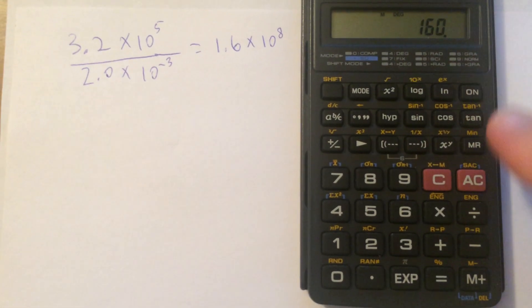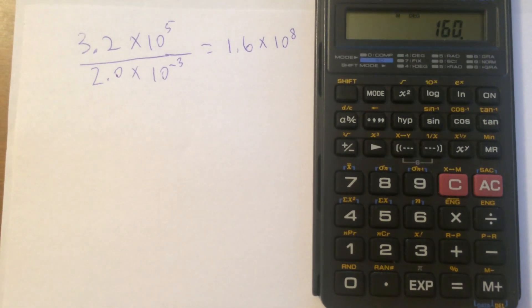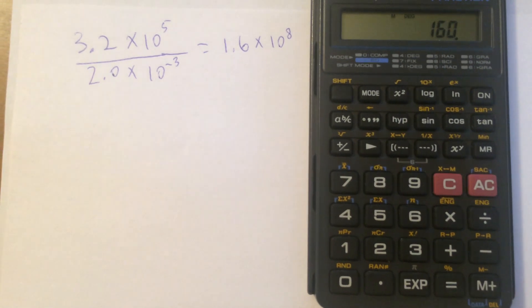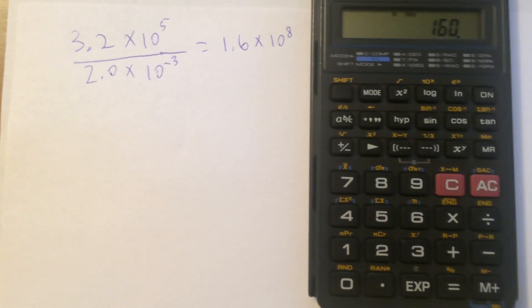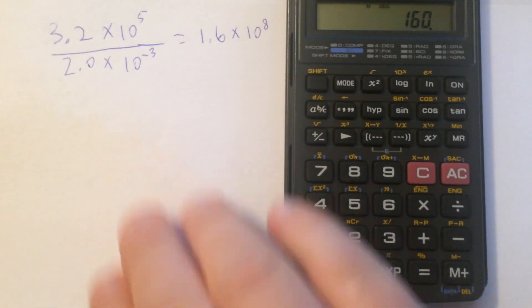And the reason for that is that when we entered 3.2 times 10 to the fifth divided by 2, the calculator resolved the operation such that it divided by 2 before we enter the next keystroke. The keystroke is times 10 to the minus 3.